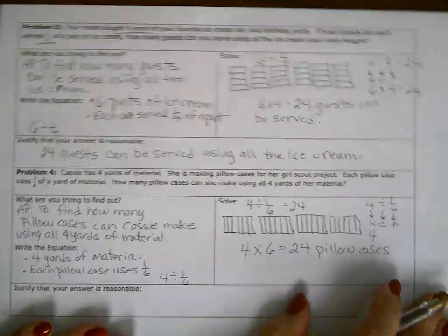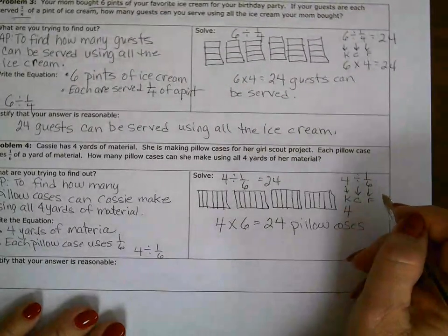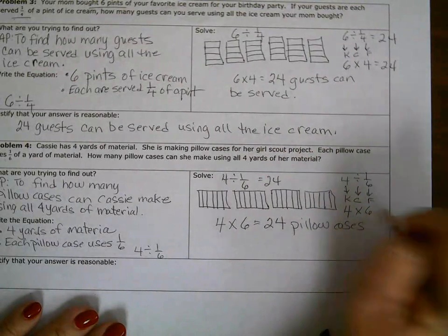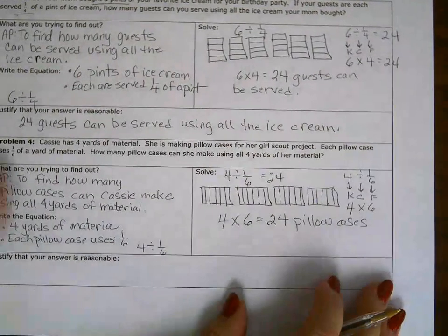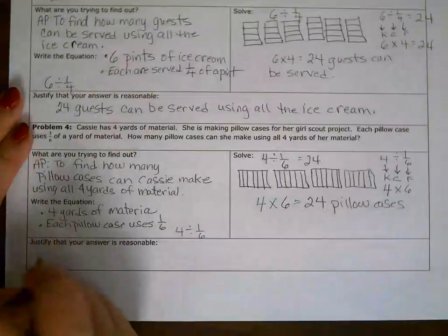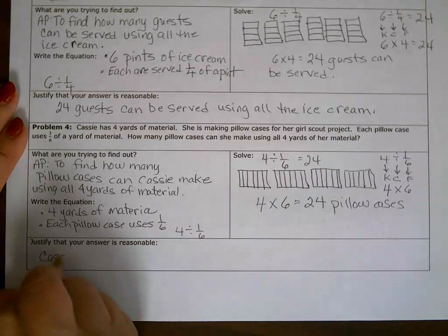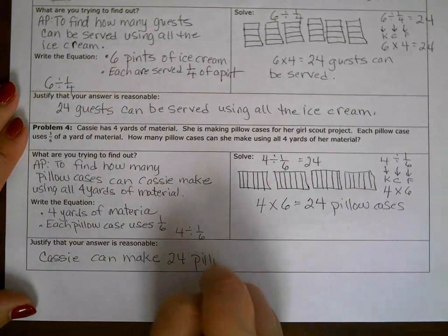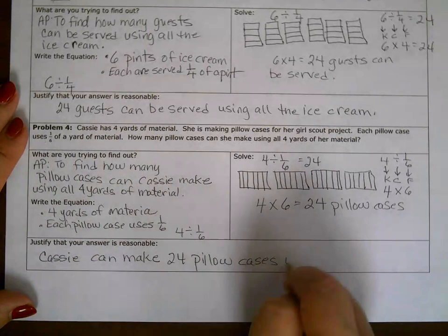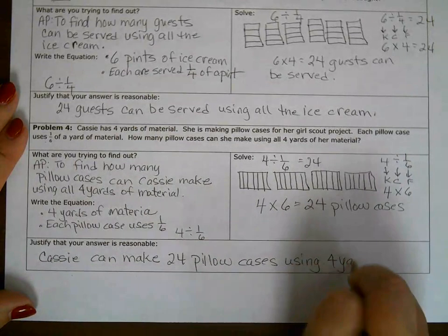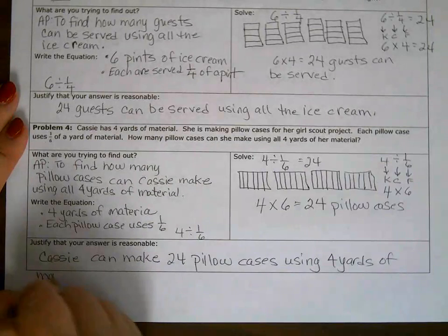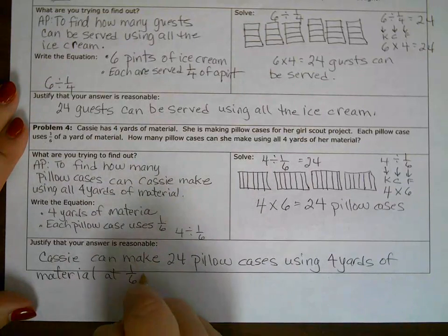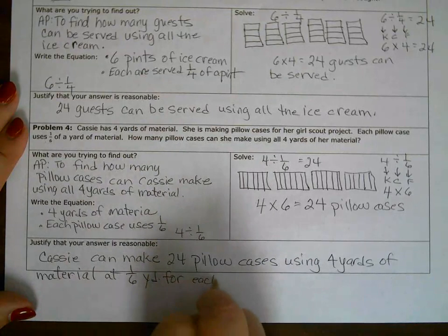Four divided by one-sixth equals twenty-four, using keep, change, flip. I keep my dividend, change to multiplication — the inverse operation — and flip so that six is now on top, making it a whole number. That equals twenty-four. It is reasonable because she is able to make twenty-four pillowcases using four yards of material at one-sixth of a yard for each pillowcase.